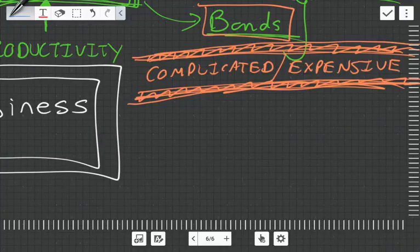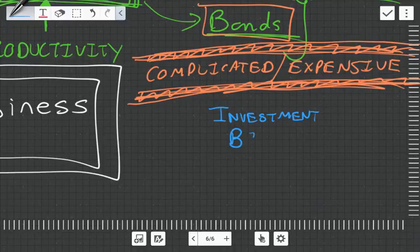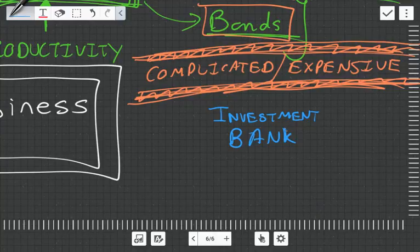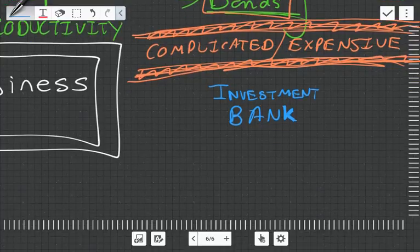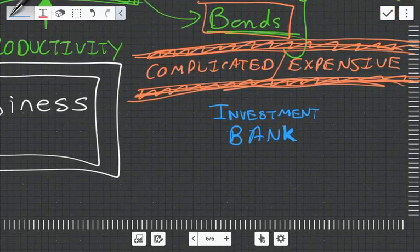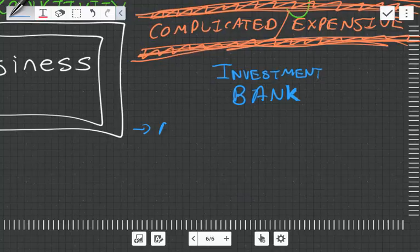In order to issue shares and bonds, they need to go through another party or organization known as the investment bank. It's weird how the word 'bank' is included because they don't really do traditional banking things, although some investment banks then evolve into taking on those traditional banking roles. What the investment banking firms specialize in is not only helping go through the regulation and helping with issuing the shares, but they advise on various things.